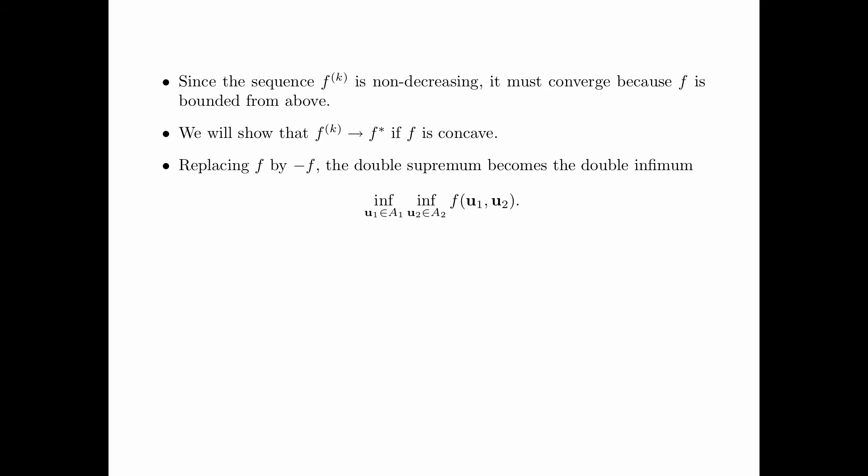Replacing f by minus f, the double supremum becomes the double infimum: infimum over u_1 in A_1, infimum over u_2 in A_2, f(u_1, u_2). The same alternating optimization algorithm can be applied to compute this infimum.